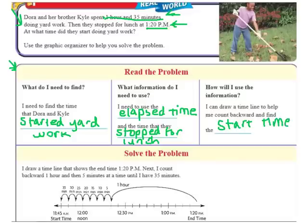So we're going to use a timeline now. Normally, you don't have to use a timeline. You can just do a subtraction problem. But the timeline helps when you're first learning. So it says, I draw a timeline that shows the end time, 1:20 PM. Next, I count backwards 1 hour. So back from 1:20 would be 12:20. So I land right there at 12:20. And then I've got to go back 5 minutes at a time until I'm up to 35 minutes. So if we're going back 5 minutes from 12:20, 12:15, 12:10, 12:05, 12:00, and then 11:55, 11:50, 11:45.